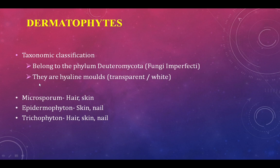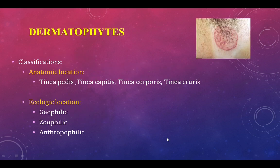The three most important dermatophyte genera are Microsporum, Epidermophyton, and Trichophyton. Microsporum invades hair and skin. Epidermophyton affects skin and nail. Trichophyton affects hair, skin, and nail. Dermatophytes are classified based on anatomic location (which body part is involved) and ecologic location (whether they come from soil, animals, or humans).